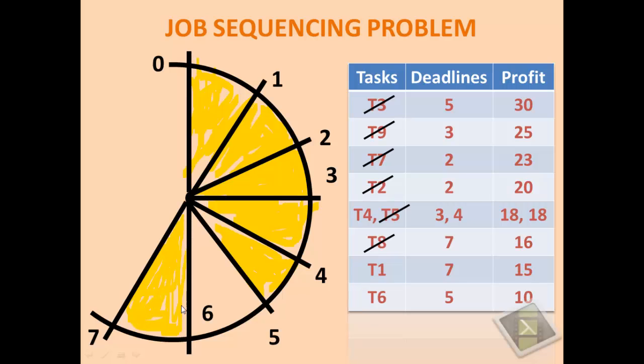Lastly we are left with only one slot which is 5 to 6. And the upcoming task is T1 with a deadline of 7. It should belong to 6 to 7 slot but it is already occupied. So we are left with only 5 to 6 slot. So we will allocate it to T1.